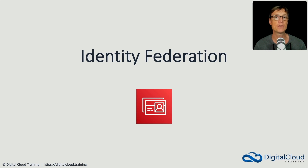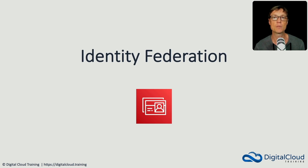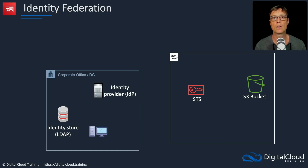Identity Federation can be a tricky topic, but there are just a few key facts you need to understand about a couple of different AWS implementations for the exam. As a concept, identity federation is about having trust relationships between multiple parties. For example, we might have an on-premises Active Directory domain, and we want to enable identities in that domain to be authenticated and then authorized to access AWS services. To illustrate, consider a computer running in an office or data center where an application needs to access an S3 bucket.